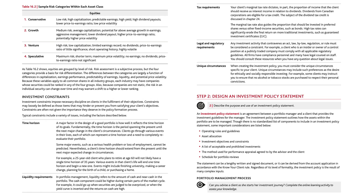As Table 16.2 shows, equities are grouped by level of risk. Risk assessment is a subjective process, but the four categories provide a basis for risk differentiation. The differences between the categories are largely a function of capitalization, earnings performance, predictability of earnings, liquidity, and potential price volatility. Because these variables apply to all common shares in all industry groups, each industry may have companies whose securities could be ranked in any of the four groups. Also, because companies are not static, the risk in an individual security can change over time and may warrant a shift to a higher or lower rating.